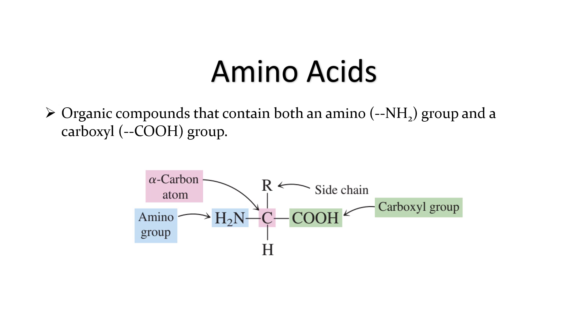More than 700 different naturally occurring amino acids are known, but only 20 of them, which we call standard amino acids, are normally present in proteins found in humans.